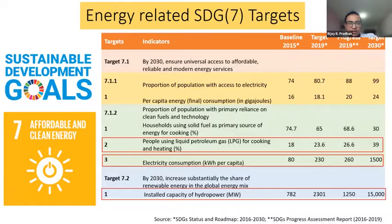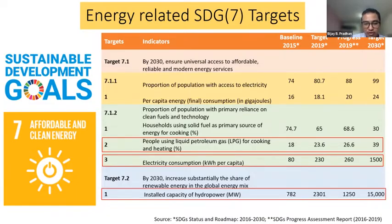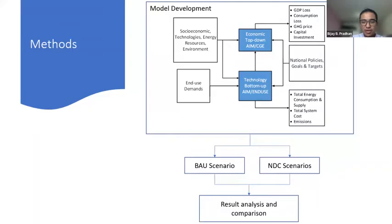The table here shows the energy-related targets in the Sustainable Development Goals. While the NDC is focused on using electricity for cooking, in the SDG it is targeted towards increasing the use of LPG by replacing solid fuels. It also has the target to increase the capacity of hydropower to 15,000 megawatt and increase electricity consumption per capita to 1,500 kilowatt-hour. In this analysis, we used the MUSE model and CGE model, and developed a BAU scenario and three NDC scenarios, comparing results between the BAU and NDC scenarios.